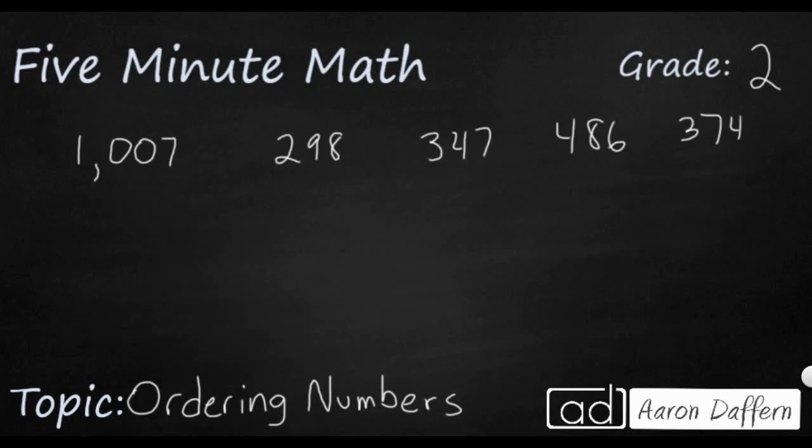Now we simply have five numbers on the screen: 1007, 298, 347, 486, 374. So I want to put these in opposite order of what we just did. I want to go from least, that means our smallest, to our greatest.